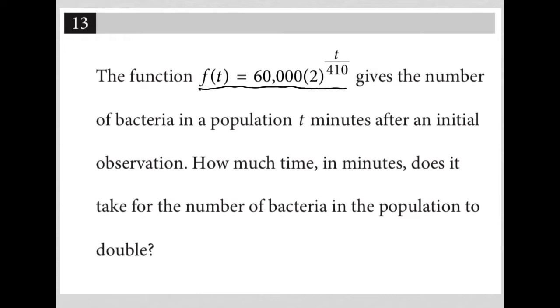Whenever I have a variable in the exponent, I like to figure out what happens when t equals 0. What happens when that whole exponent equals 0? Because if this were 0, then 0 divided by 410 is still 0. 2 to the 0 power becomes 1 and we get 60,000.